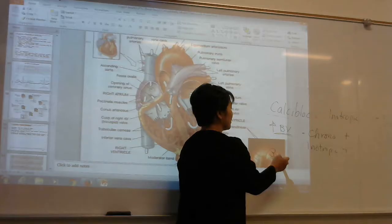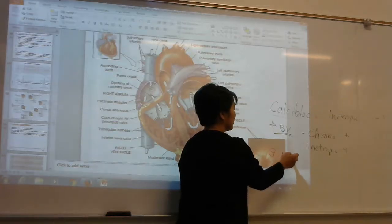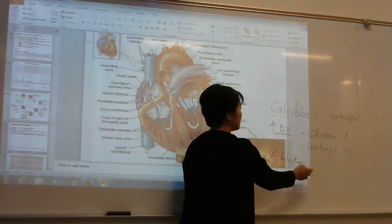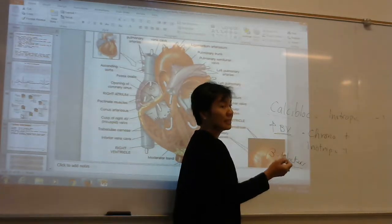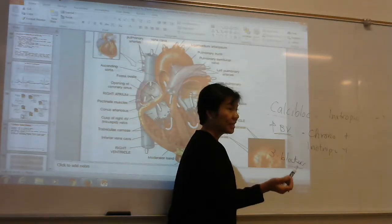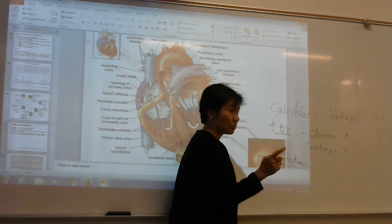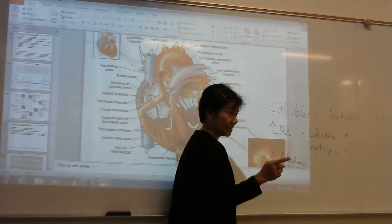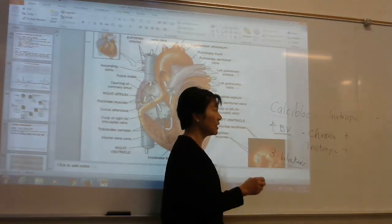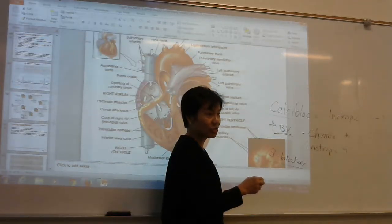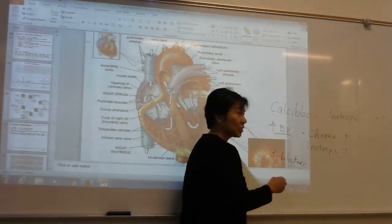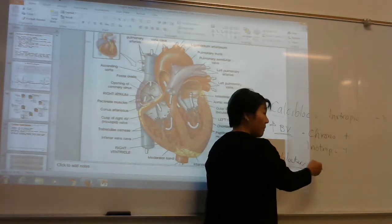Beta blockers — what are beta blockers for? They slow down the heart rate. Beta blockers are given to slow down the heart rate, so the effect is chronotropic.